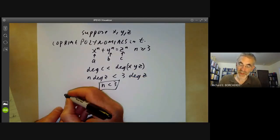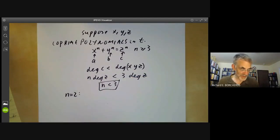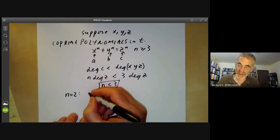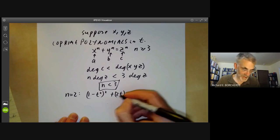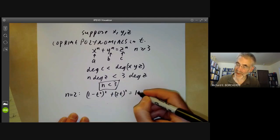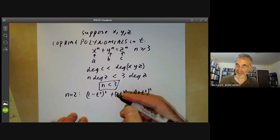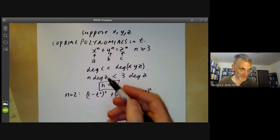If N equals two, there are indeed solutions. For instance, we can take (1 minus T squared) squared plus (2T) squared equals (1 plus T squared) squared. So we can't do better than this.